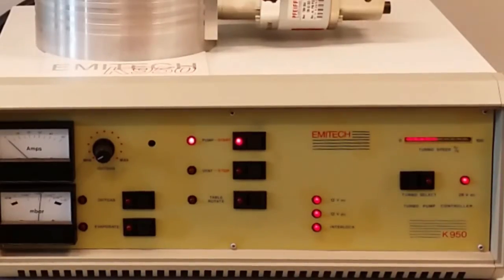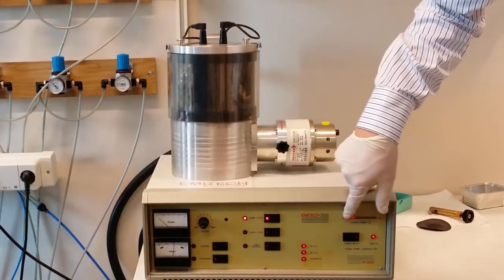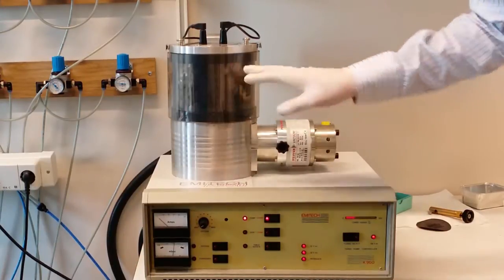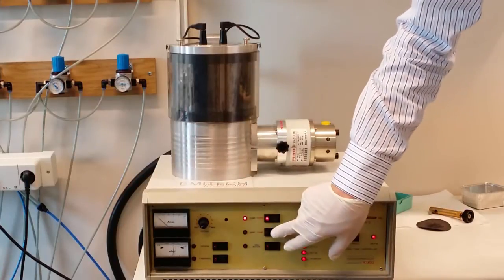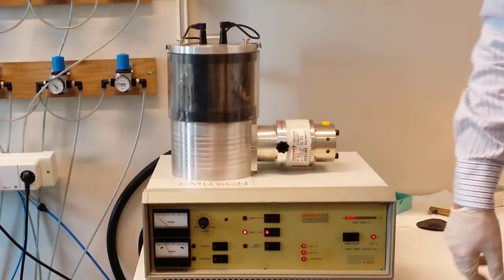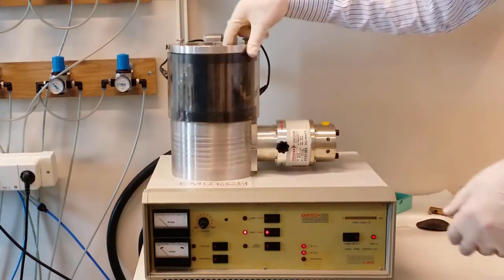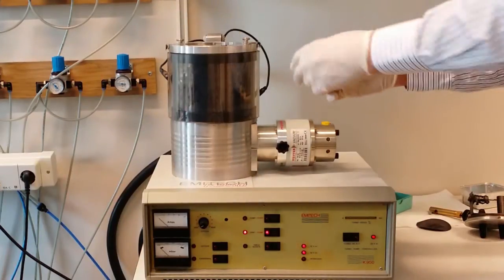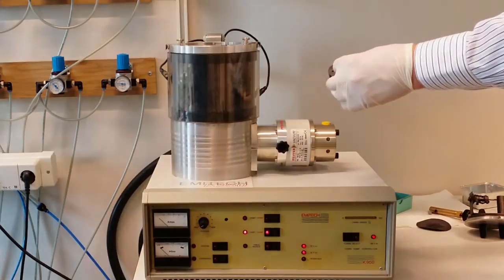You should at least wait until you have three diodes here on the scale, or less. So now we have reached three diodes on the scale here. So now the pump has sort of stopped and we can vent the chamber and let air inside. Okay, our sample is finished. Now let's instead try the gold sputtering machine and see how that one works.